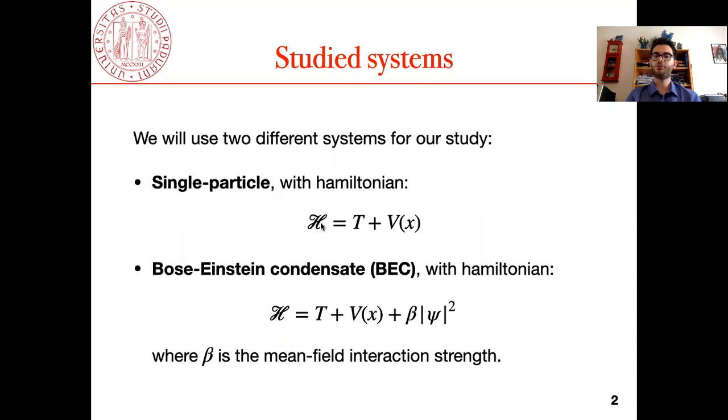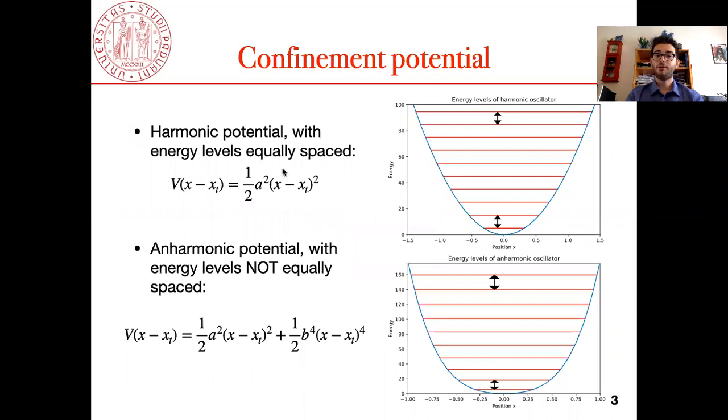We will use two different systems: the single particle with this Hamiltonian where T is the kinetic energy and V the potential, and the Bose-Einstein condensate where this term is the mean field interaction between bosons.